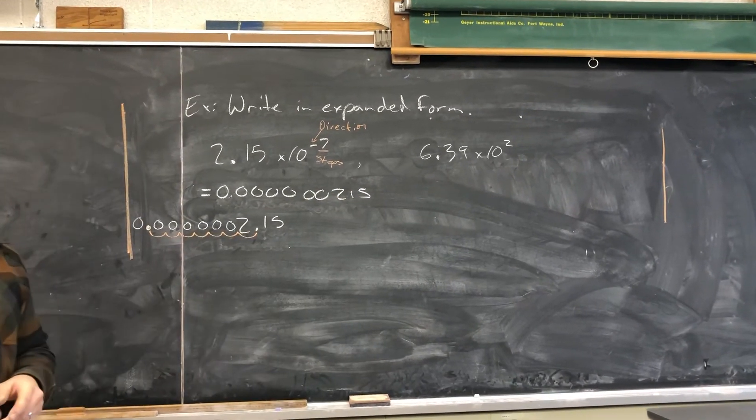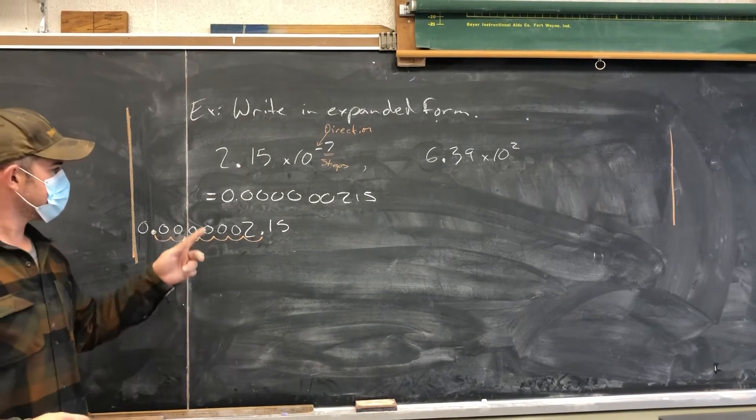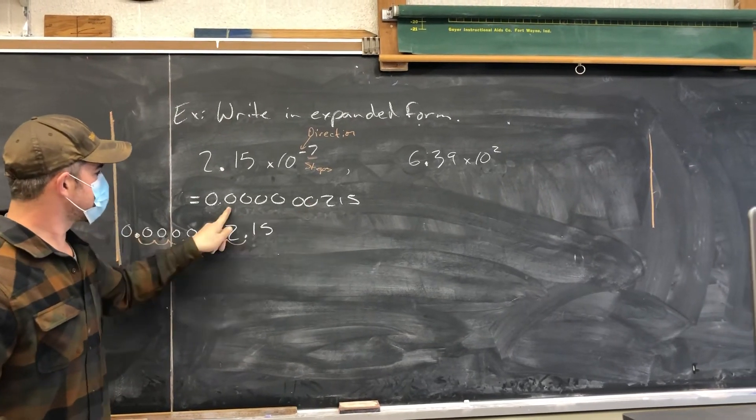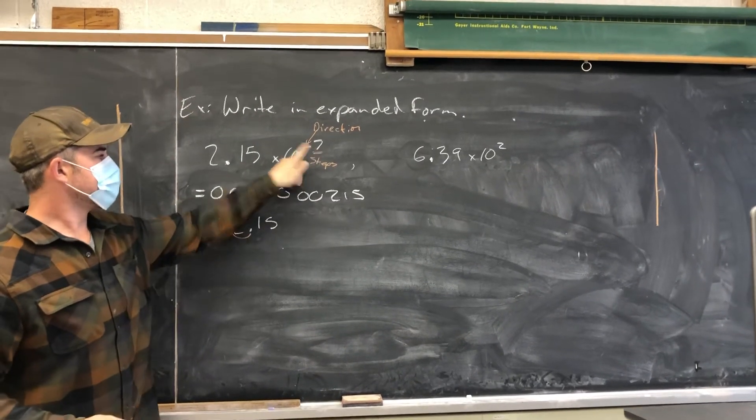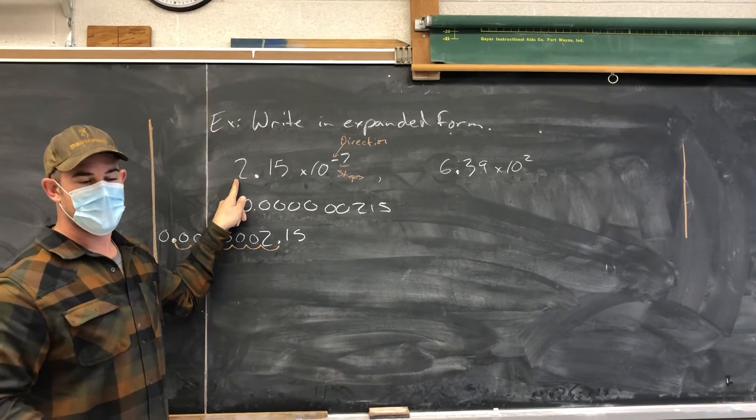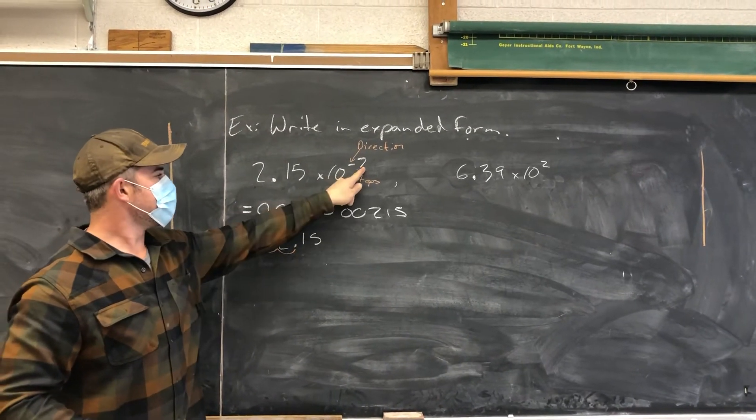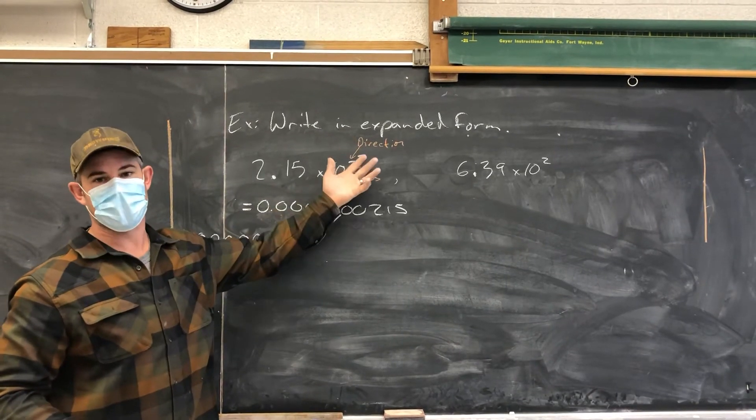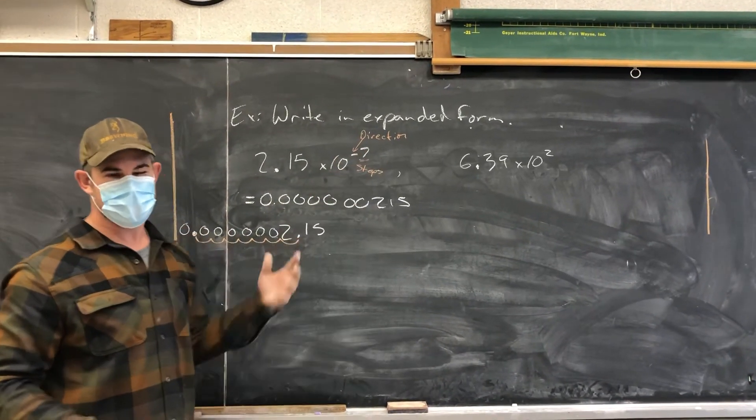The other nice part about scientific notation is notice that we had six leading zeros there. Because our values only ever have one number in front of the decimal place, when we're moving to the left, the number of leading zeros will always just be one less than your magnitude number. So that's a cool little check.